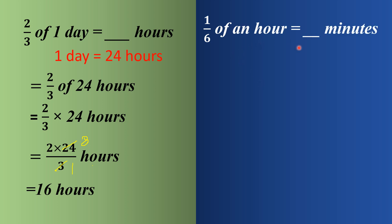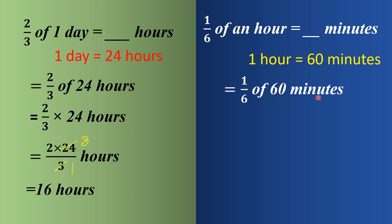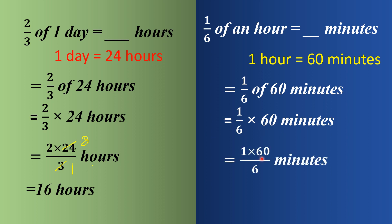Next question: 1/6 of an hour equals how many minutes? We know 1 hour has 60 minutes, so the question becomes 1/6 of 60 minutes. Replacing 'of' with a multiplication sign: 1/6 multiply 60 minutes. So it becomes 60 by 6, and solving gives the answer 10 minutes.